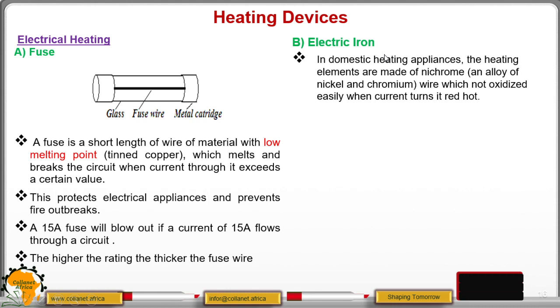Now, in domestic heating appliances, we have what we call the heating filament. And this heating filament is made of nichrome. Nichrome is coming from the alloy of nickel and chromium.